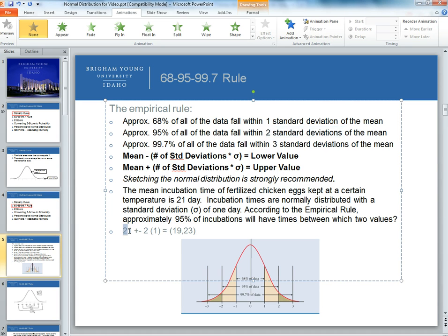So what we do is we take the mean plus or minus two standard deviations, and then we times the standard deviation, which is 1 here. And so what we do is that we take 2 times 1, we get 2, and then we add and subtract that from 21 to get 19 and 23. So what that means is that 95% of all the data falls between 19 and 23 days.